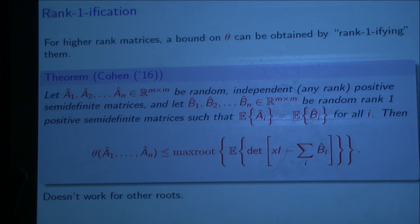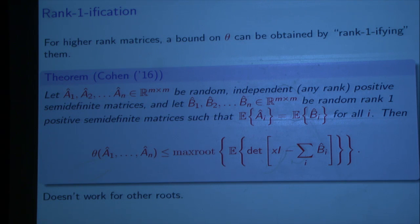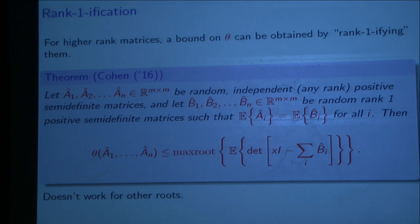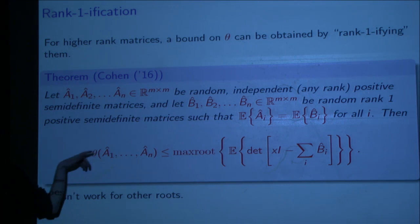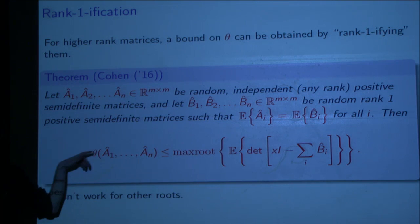There's a question about what's true for a random variable versus what's an existence statement. The statement is that these things exist — it's not a statement that a random object achieves the bound. This quantity theta was defined as the minimum over all things inside the support, so it's a fixed thing we can find. Michael Cohen showed that if you're interested in the maximum root, the rank-one case is essentially the worst case. Unfortunately, this doesn't work for other roots.